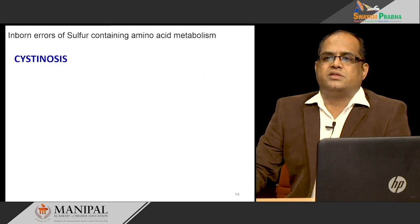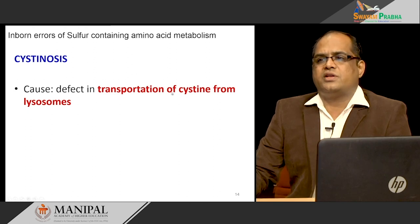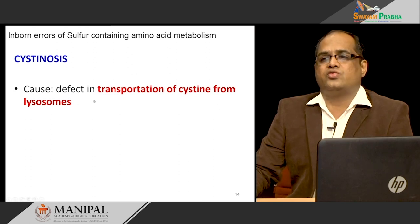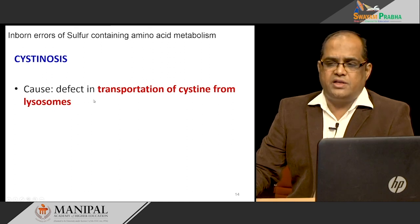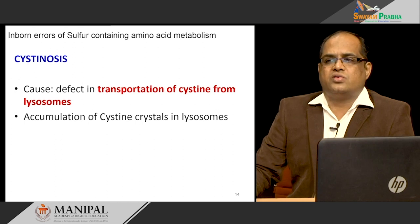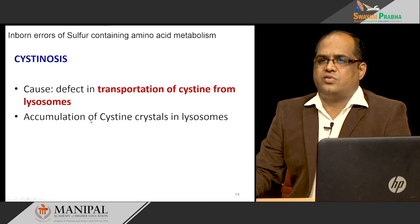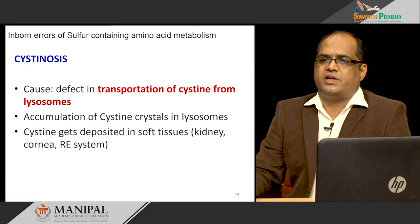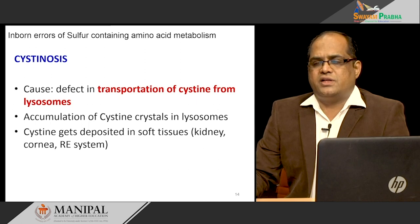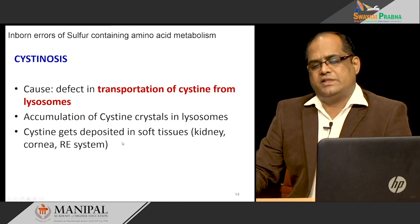Next is cystinosis. Here the defect is in transportation of cysteine from lysosomes — cysteine is trapped in the lysosomes of many tissues. There is accumulation of cysteine crystals in the lysosomes, leading to cystinosis, with deposition in soft tissues like the kidney, cornea, and reticuloendothelial system.